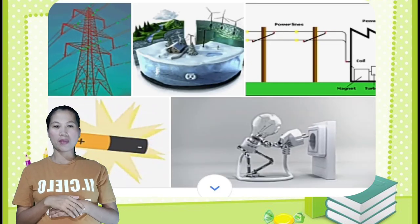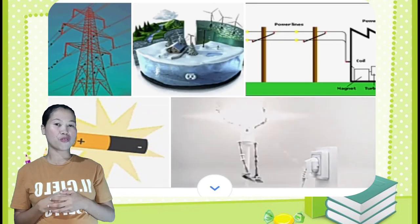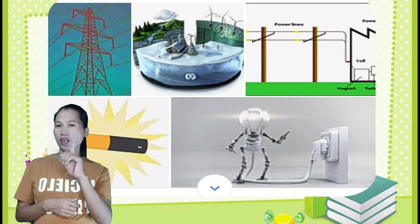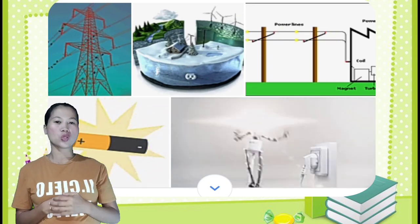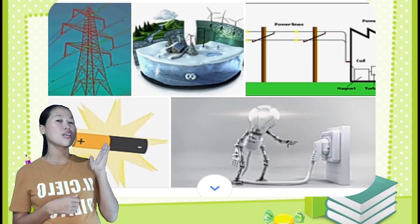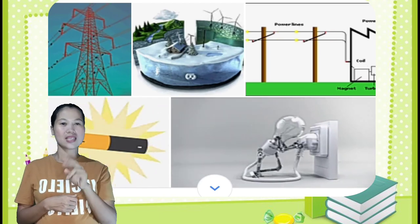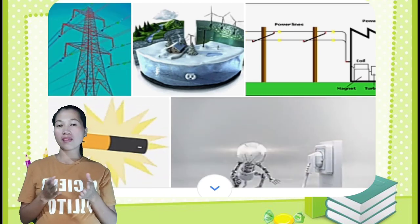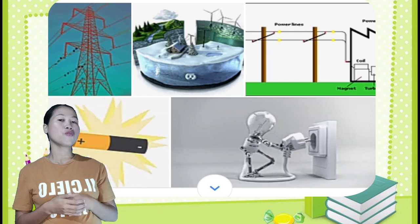Two conditions must be met in order for electricity to flow. First, there must be a source of electricity. Second, there must be a complete path for the electricity to flow through.